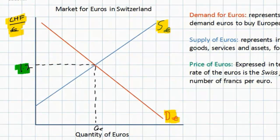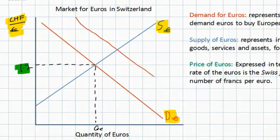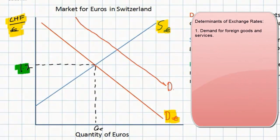What could cause this exchange rate to change? Just like any price, a change in an exchange rate occurs whenever there's a change in either the demand for or the supply of a particular currency. For example, what if Swiss household incomes were to rise and therefore they would begin demanding more imports from European countries? In order to buy more imported goods, Swiss households would demand more euros, so the demand for euros would increase and the exchange rate of the euro would increase to perhaps 1.4 francs per euro.